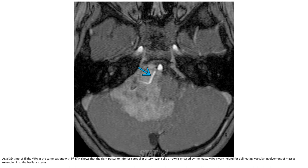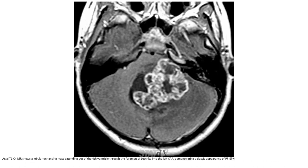3D MRA in the same patient with posterior fossa ependymoma, showing that the right posterior inferior cerebellar artery is encased by the mass. MRA is very helpful for delineating vascular involvement of the mass extending into the vascular system. This is a T1 post-contrast image showing a low signal enhancing mass extending out of the fourth ventricle through the foramen of Luschka into the CPA cistern, demonstrating the extent of the tumor.